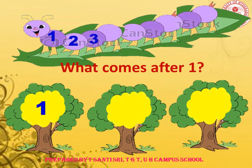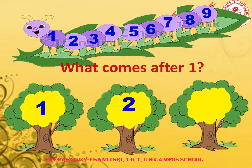The caterpillar is not done yet — she brought one more question for us. What comes after 1? After 1, what is the number? After 1 we have 2, and after 2 we have 3. So after 1 we will get 2 and 3.